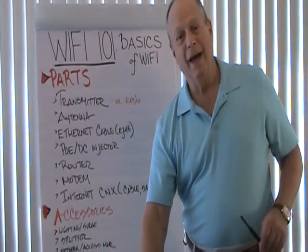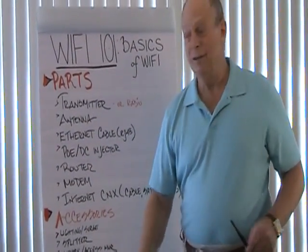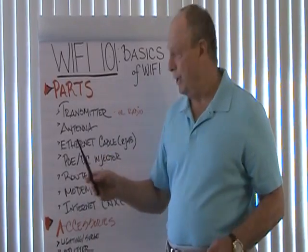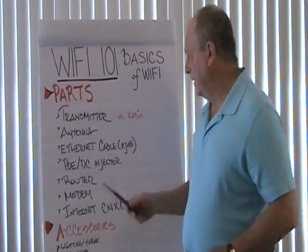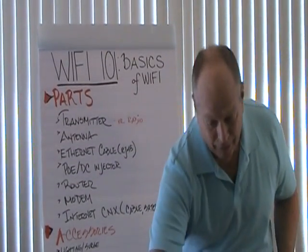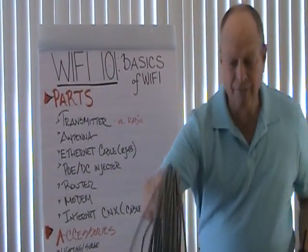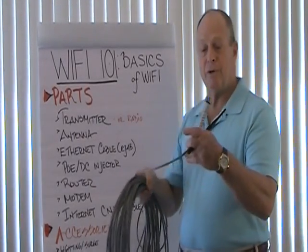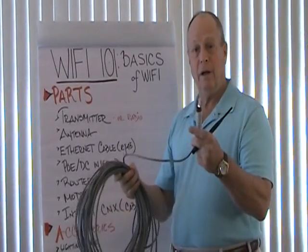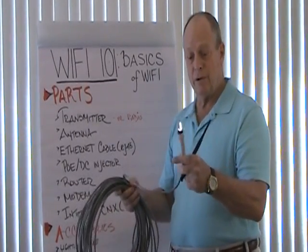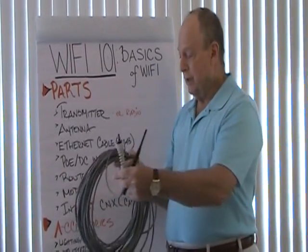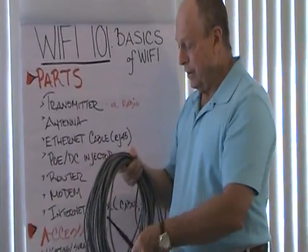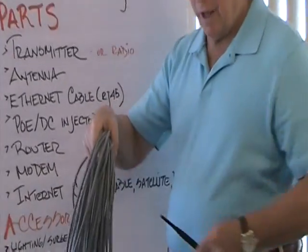By the way, outside of the United States, an antenna may be called an aerial. The next item is an ethernet cable, RJ45 — very typical of what you find in any networking situation. It's an RJ45 connector and a length of cable.